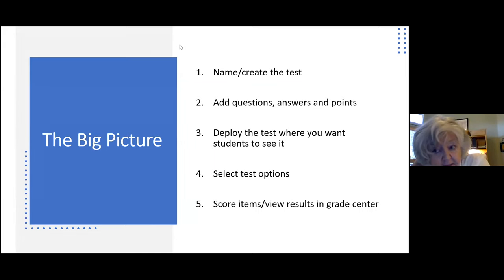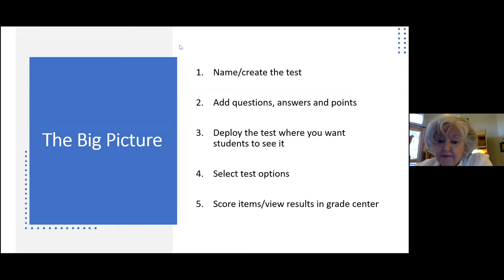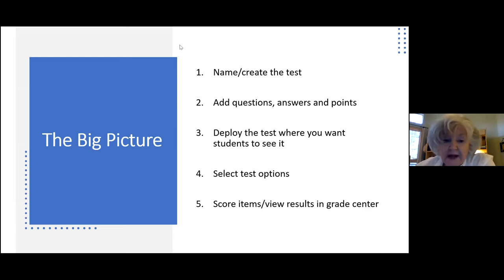These five steps: you name that test, and think of it as creating a blank test that has a name. Then you're going to add your questions, say what the right answers are, say how many points. But that's all happening in Blackboard in an area called Test Surveys and Pools. You're going to deploy the test where you want students to see it, and we'll spend a little time there. There are dozens of test options, and we're going to talk about a bunch of them. Then we'll talk about scoring the items and so on. So that's the big picture.